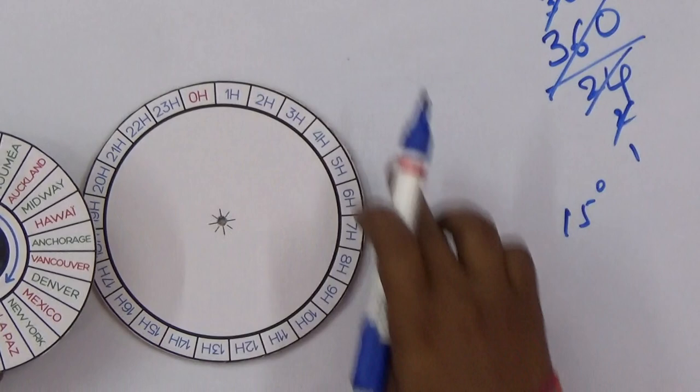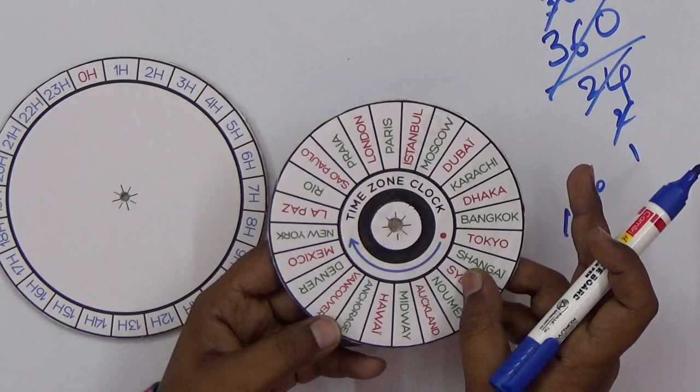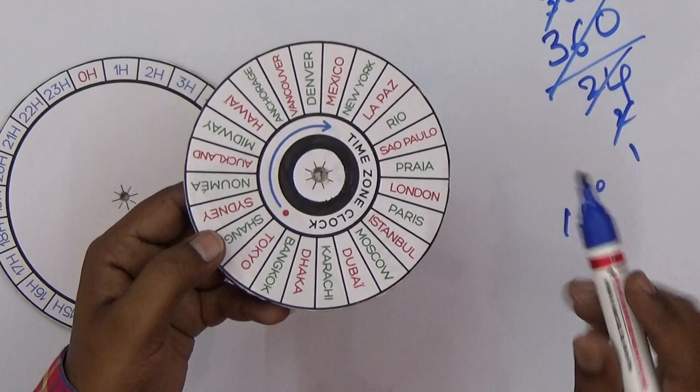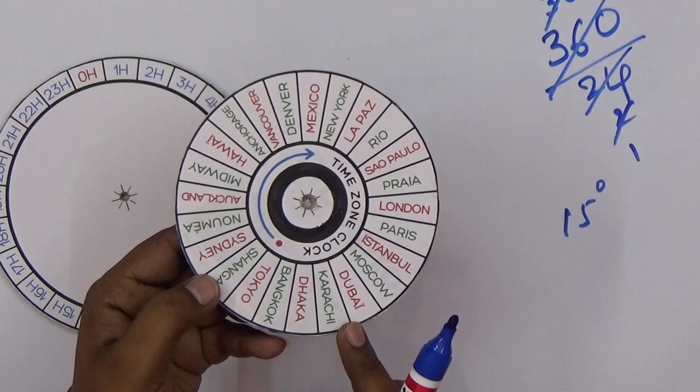This is a sample project showing the time zone. For example, Rio, Dubai, Karachi—from Dubai to Karachi is exactly one-hour gap. Karachi to Dhaka, Bangkok, and Tokyo also have one-hour time differences.